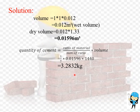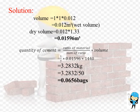Now we are going to calculate how many bags of cement are used for plastering. For that we need to divide the quantity of cement by 50, so that we can calculate the number of bags required for plastering. The amount of cement bags required for 1 meter square wall plastering is 0.0656 bags.